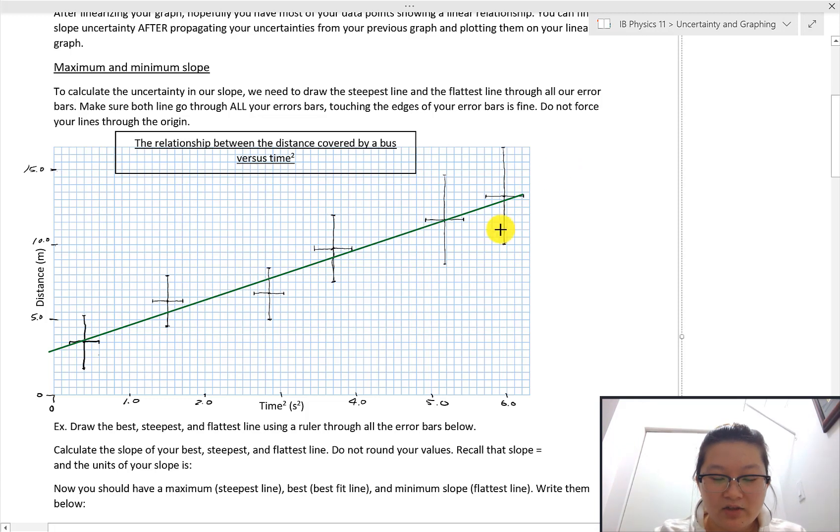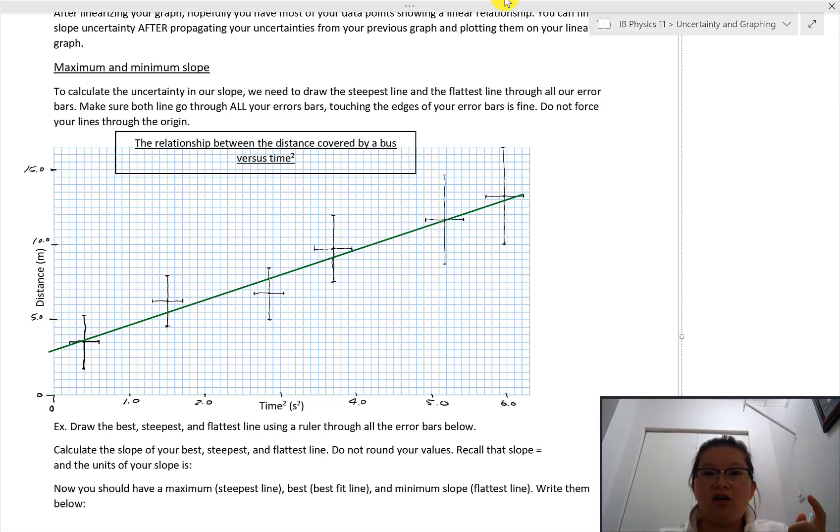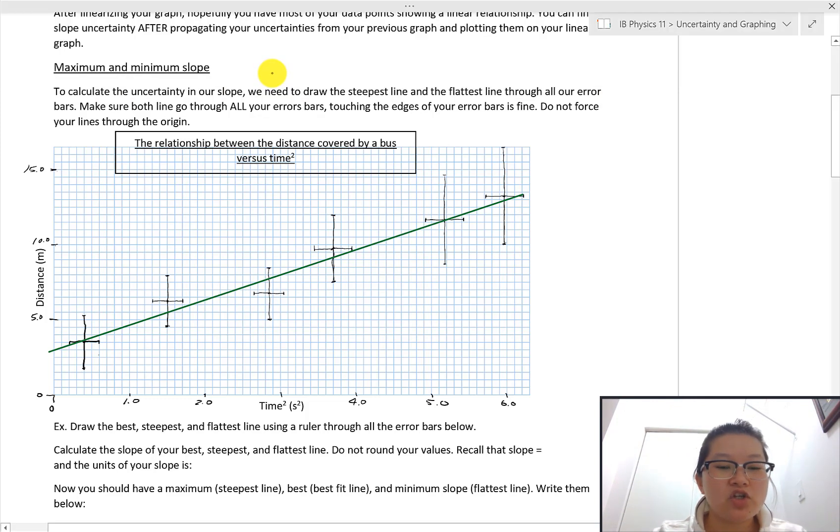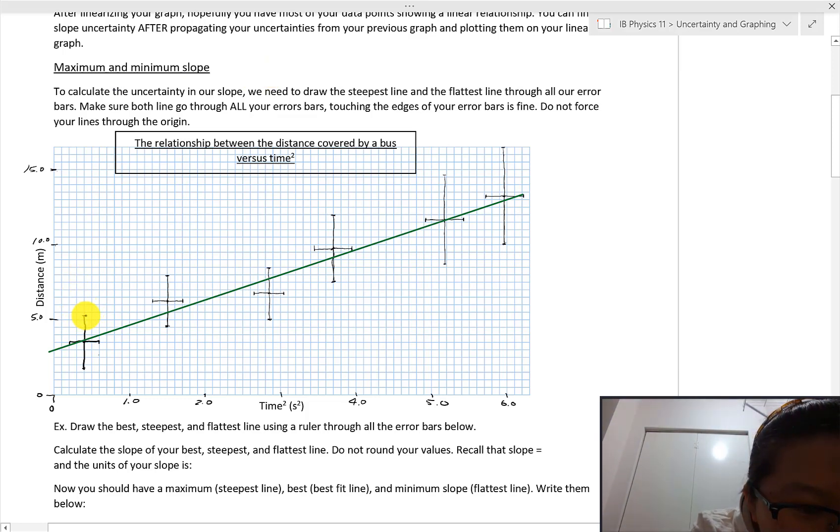So what does that look like generally? And this is speaking from an ideal perspective, which never happens in the lab. But imagine all of my error bars will form kind of like a little box, a little box containing all the possibilities of where that data point could be. So I'm going to shade it off so you can see what I mean.